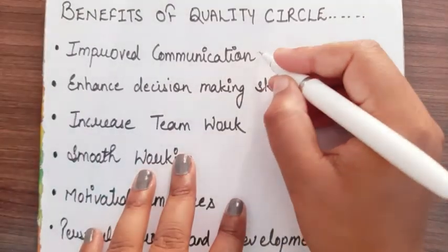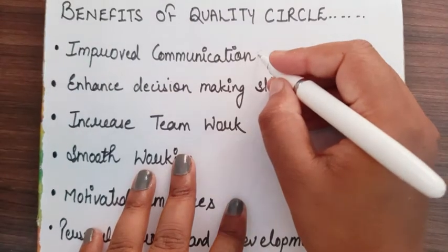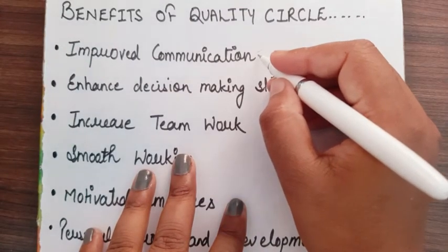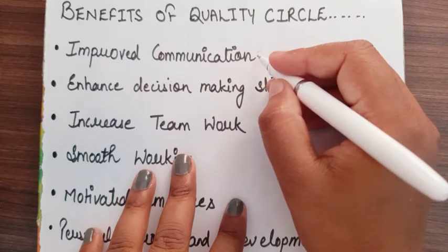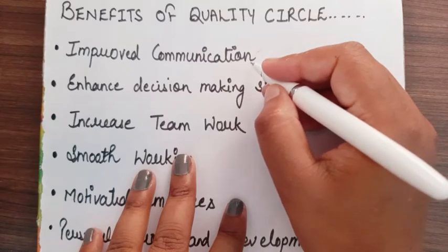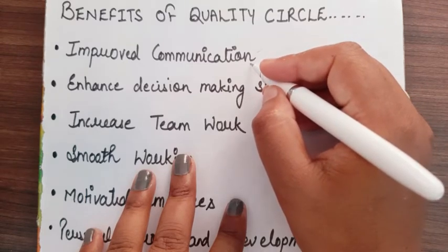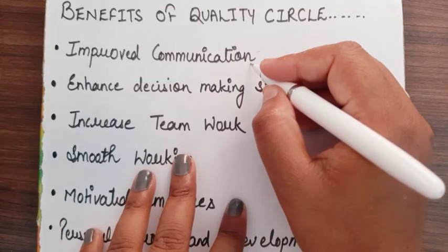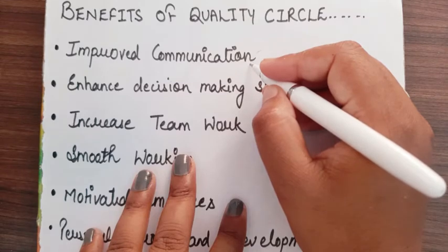As I told you, quality circles are basically groups of employees. When you work in a group, you understand each other's viewpoints. When you are working together, facing each other, sharing your views and thoughts with one another, your communication process improves much more compared to working individually.